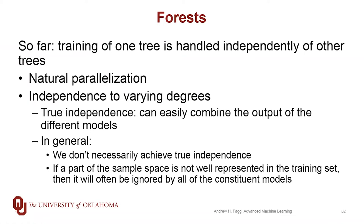The methods that we've talked about so far have afforded a certain degree of parallelization in that training of, say, one decision tree is handled independent of training of the next tree versus the next tree in the sequence. This allows us to throw these trees out to the different cores on our computer, and they can do their training without having the different cores interact with one another. Depending upon the particular ensemble algorithm that we've talked about, we've achieved some degree of statistical independence between these different trees.